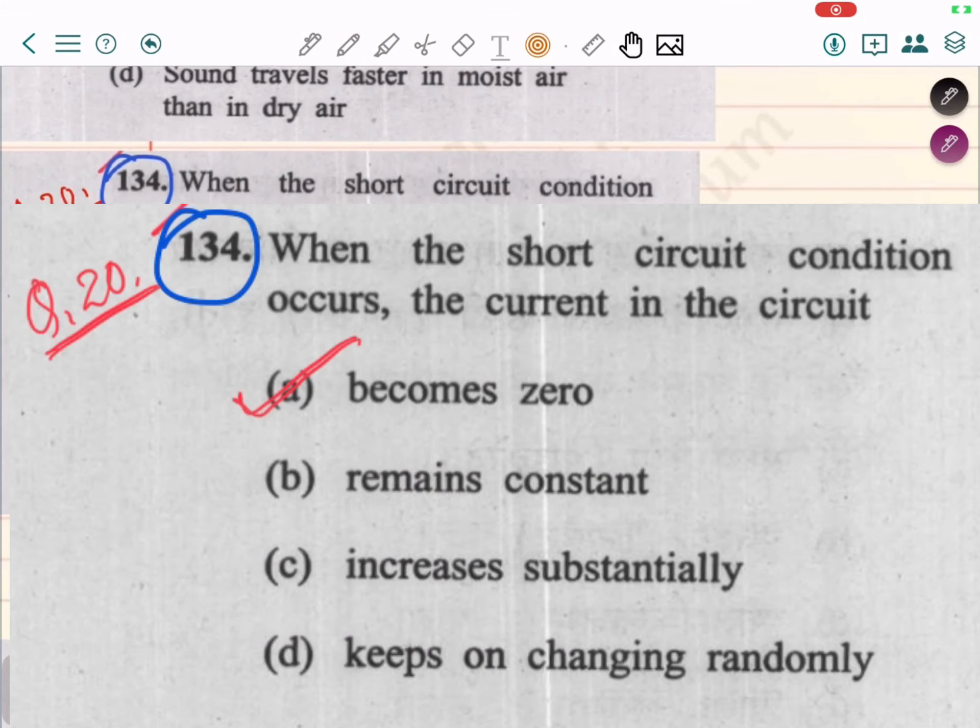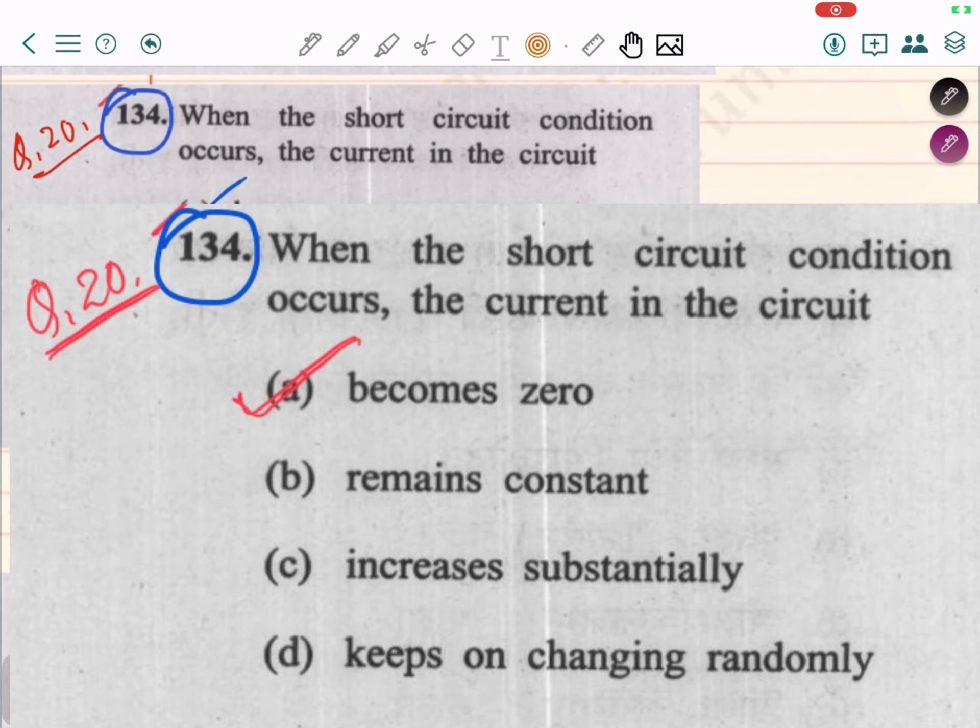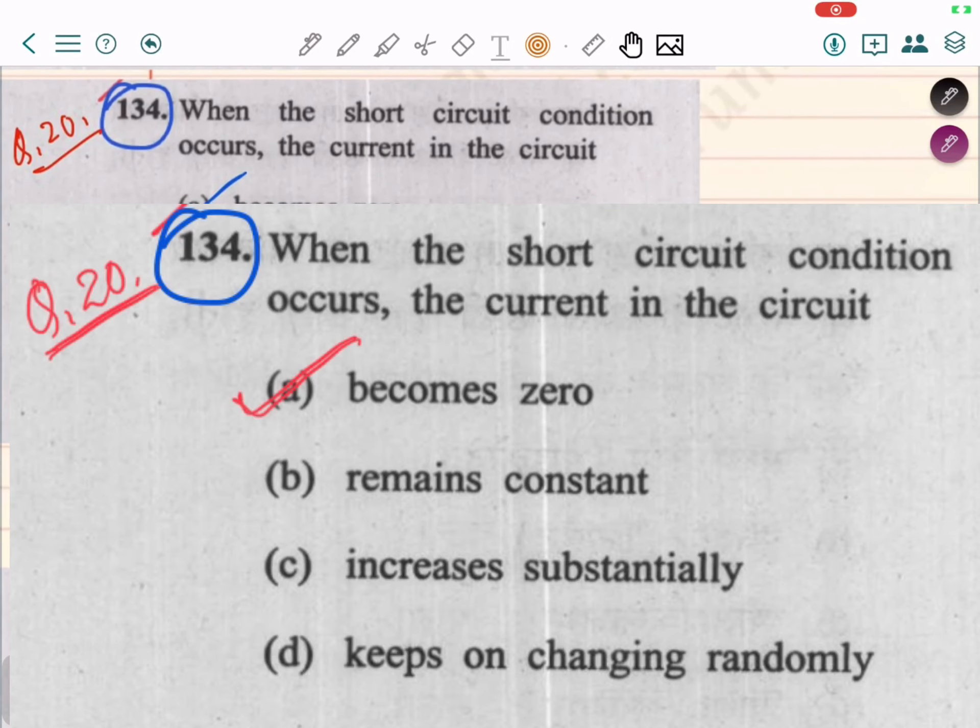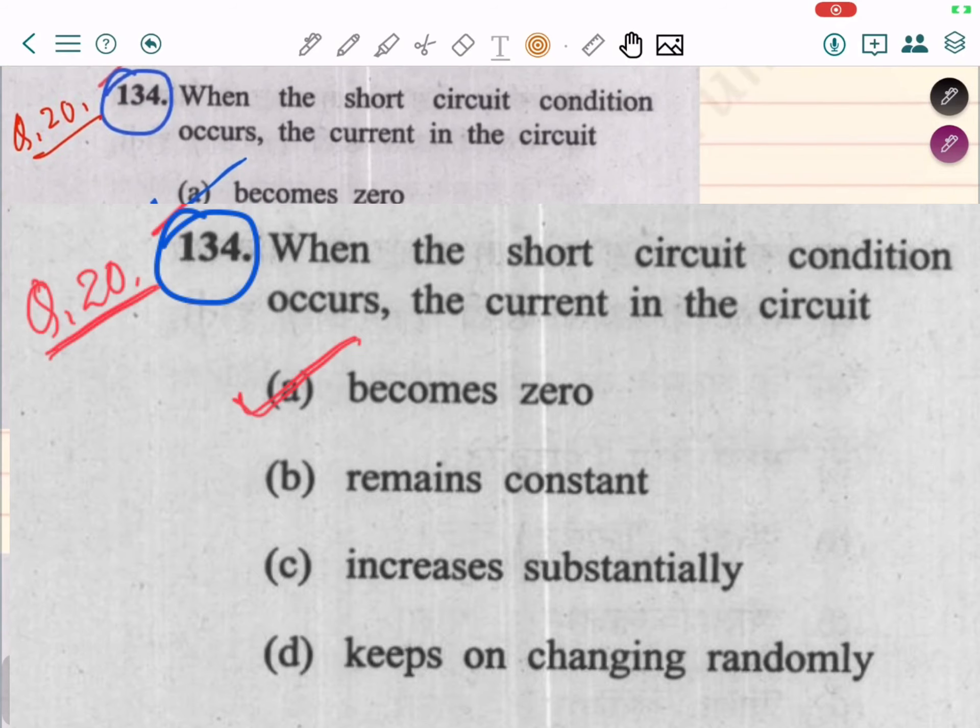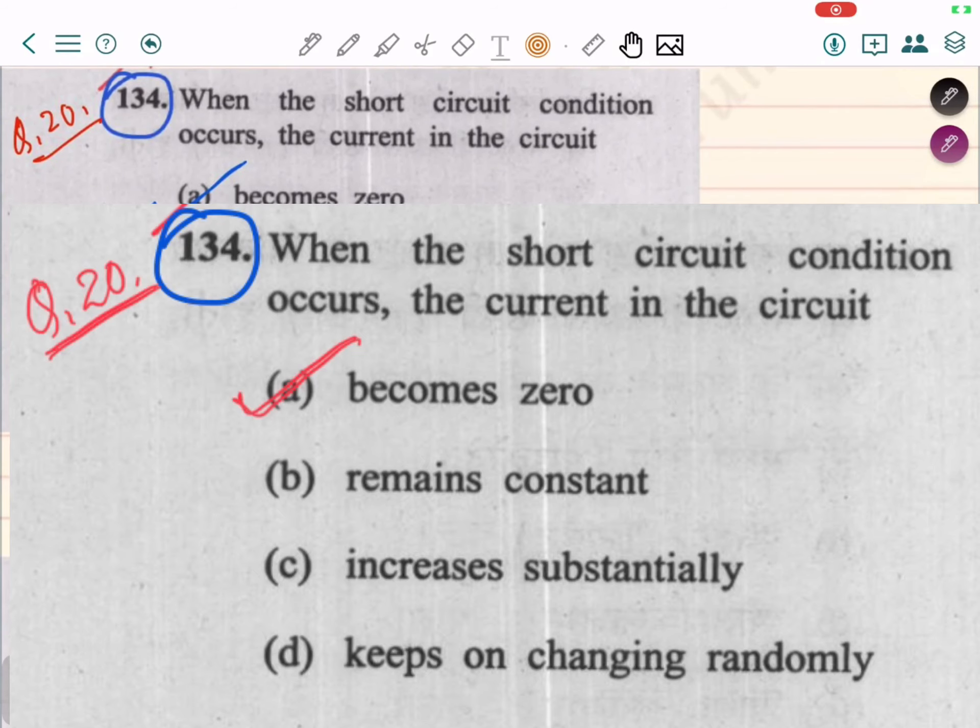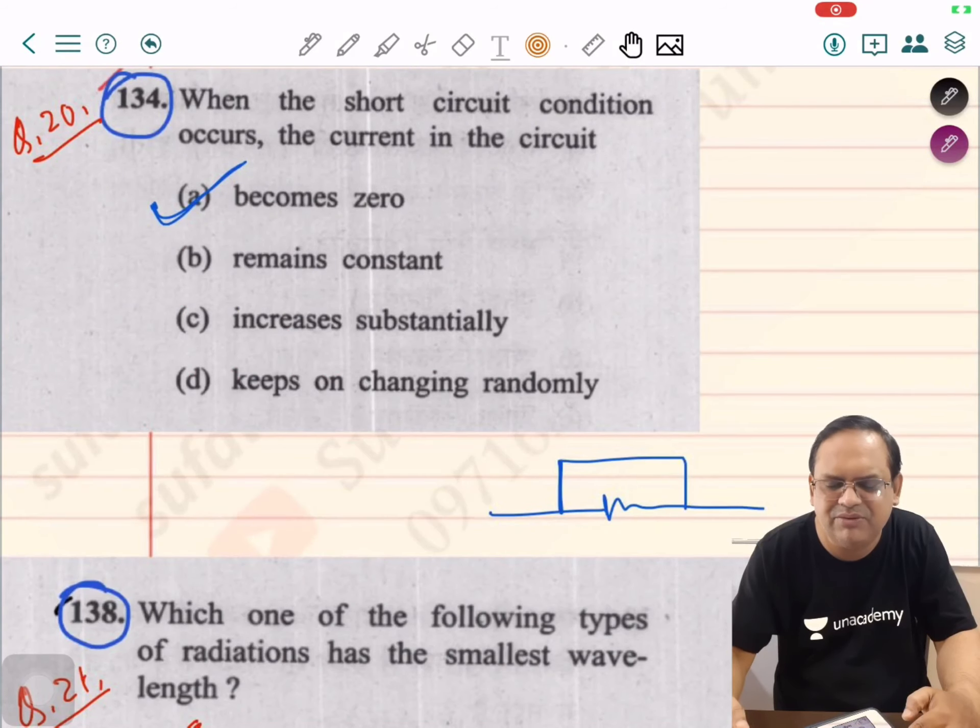Question number 20. When the short circuit condition occurs, the current in the circuit becomes zero. I have given one simple example of short circuit: this resistance is without any current.